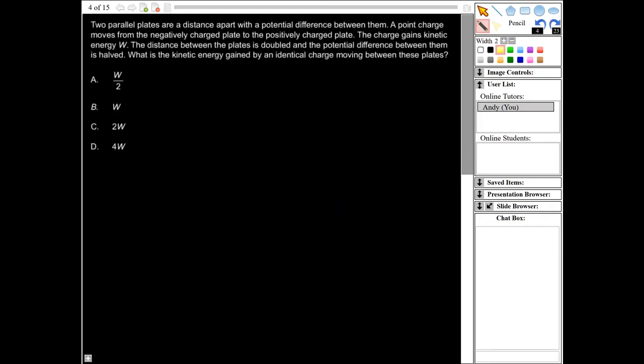Next question. It says two parallel plates are a distance apart with a potential difference between them. A point charge moves from a negatively charged plate to a positively charged plate. The charge gains kinetic energy W. The distance between the plates is doubled, and the potential difference between them is halved. What is the kinetic energy gained by the identical charge moving between these plates?